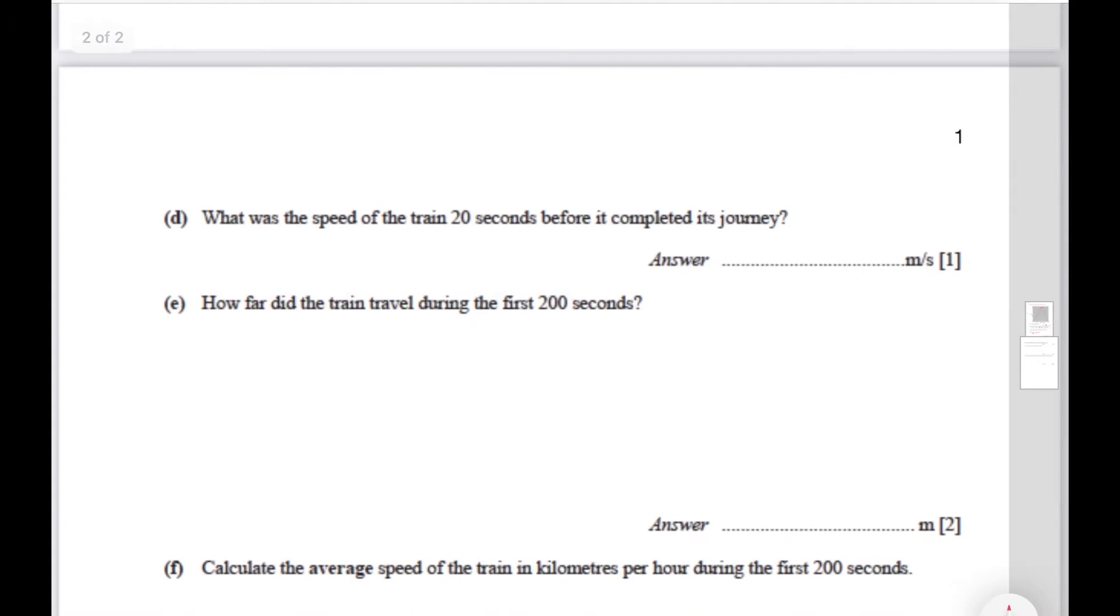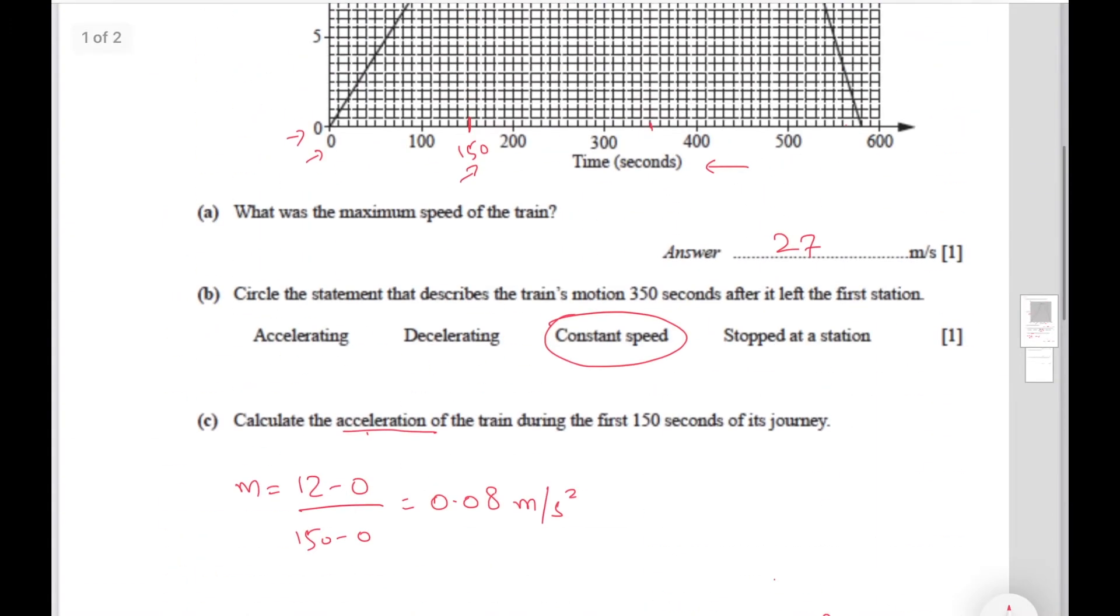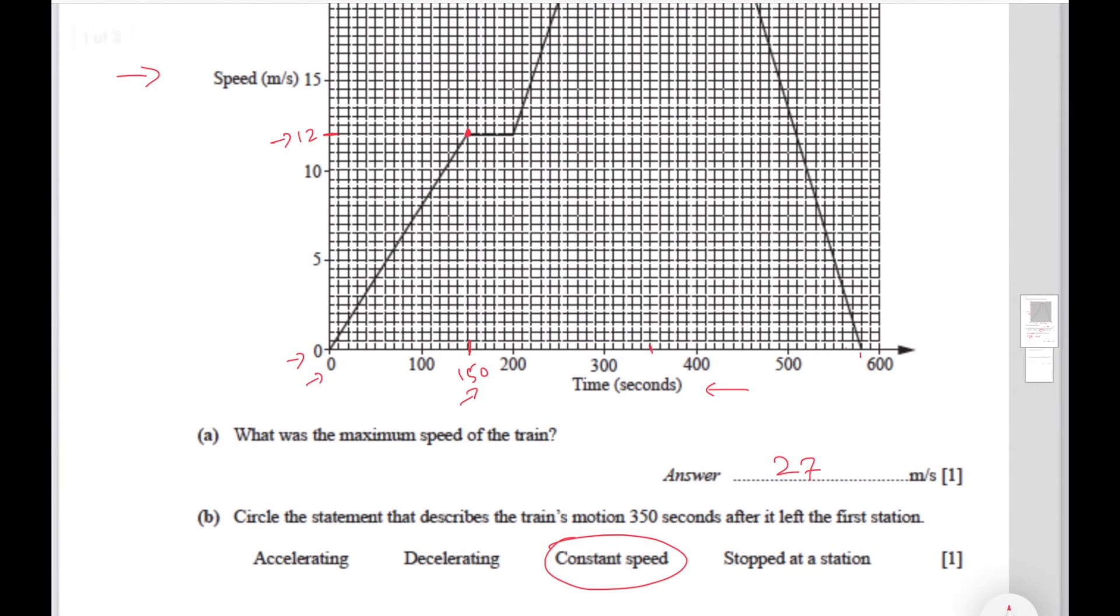The next part says what was the speed of the train 20 seconds before it completed its journey. So it completed its journey over here. That means you go one and two places over here. That means you draw a horizontal line at this point.